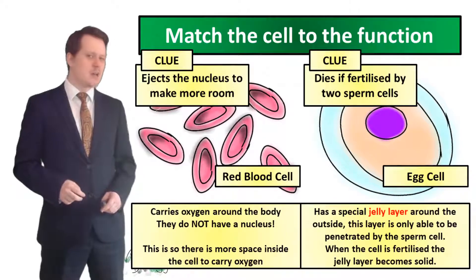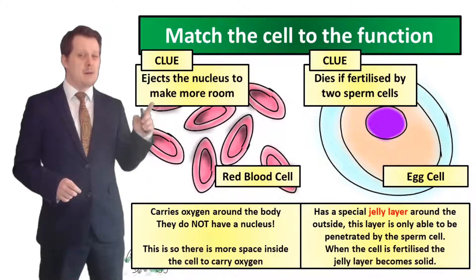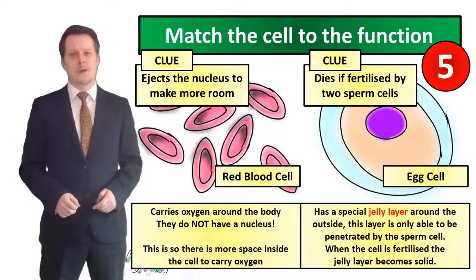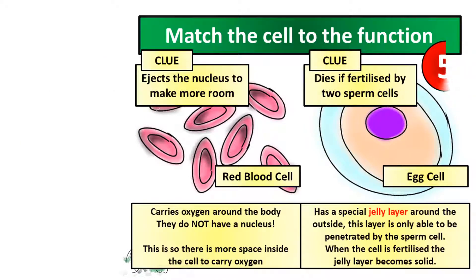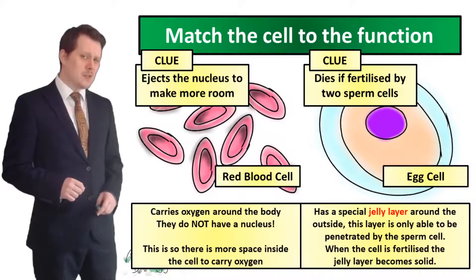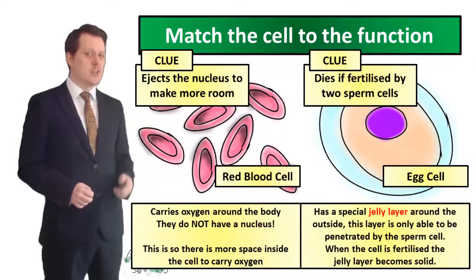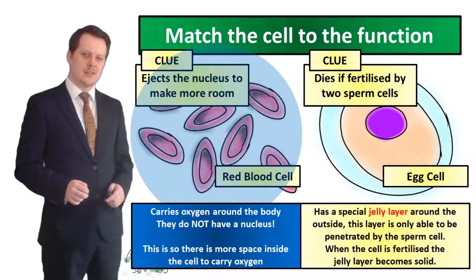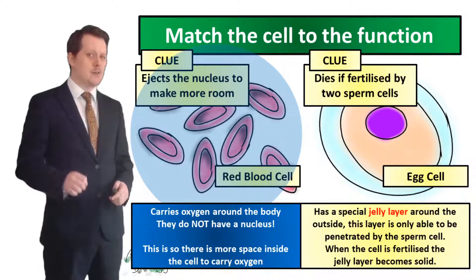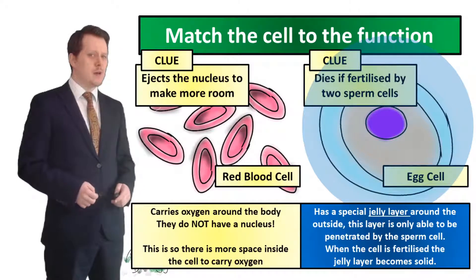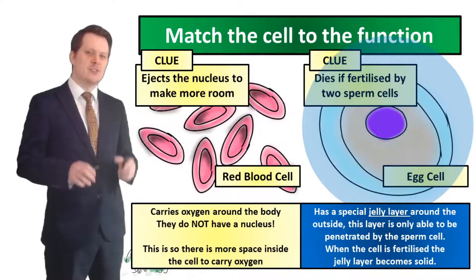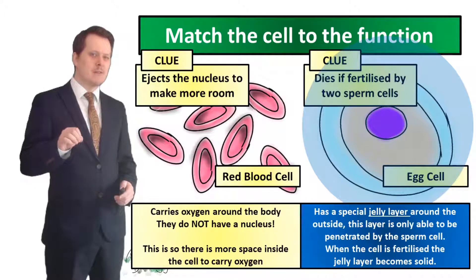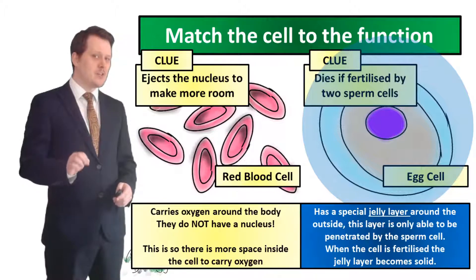Next we've got two specialized cells to look at with two definitions left. Our red blood cell has the clue that it ejects the nucleus to make more room — it carries oxygen around the body and does not have a nucleus, so there is more space inside to carry oxygen. Our egg cell has the clue that it dies if fertilized by two sperm cells. It has a special jelly layer around the outside that can only be penetrated by one sperm cell; when fertilization occurs, the jelly layer becomes solid to prevent fertilization by a second sperm.